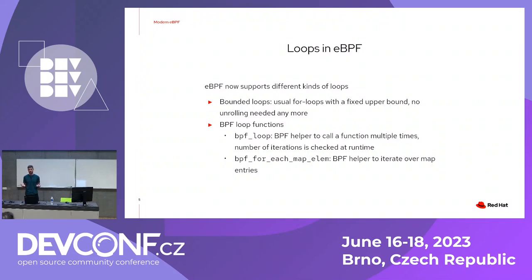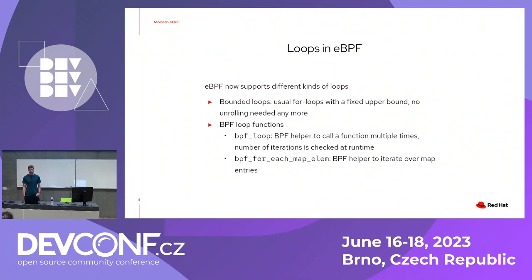Further additions were what I call loop functions. The first is BPF loop — a helper function that takes a number of iterations and runs a callback function that many times. The number doesn't need to be a compile-time constant; it's checked dynamically at runtime, so you can pass a number from a network packet, for example. That probably covers all loop use cases. There's also bpf_for_each_map_elem, which lets you iterate over the contents of BPF maps — keys and values — something that wasn't easily doable before.